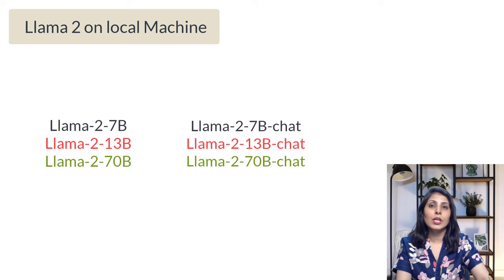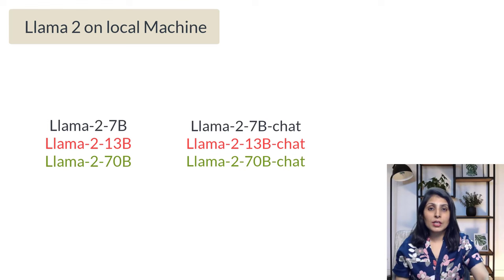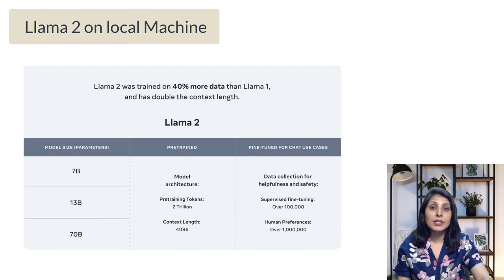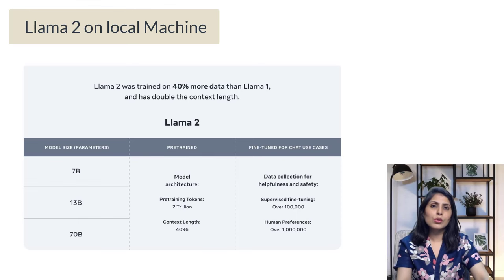LLaMA 2 comes in two flavors: LLaMA 2 and LLaMA 2 Chat. LLaMA 2 Chat is fine-tuned for two-way conversation. Meta researchers have released different variants of LLaMA 2 and LLaMA 2 Chat with different parameter sizes, including 7 billion, 13 billion, and 70 billion parameters. Today I'll show you how to use one of these chat models on your local machine.